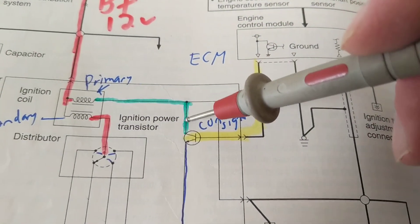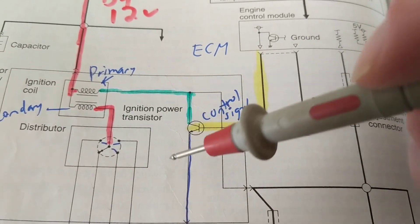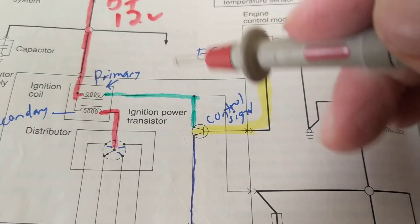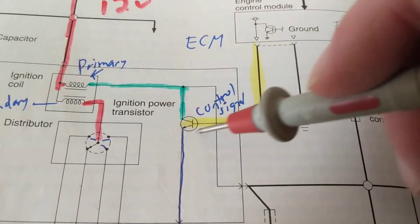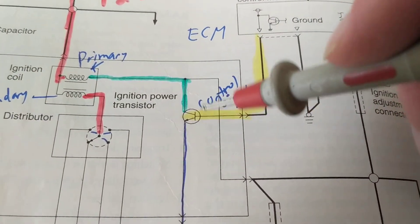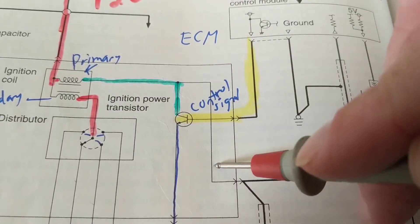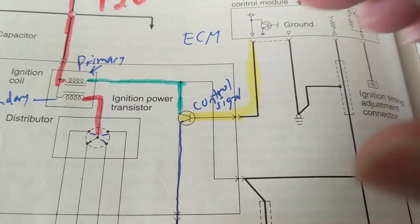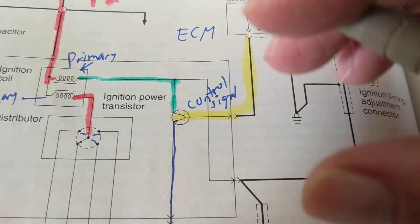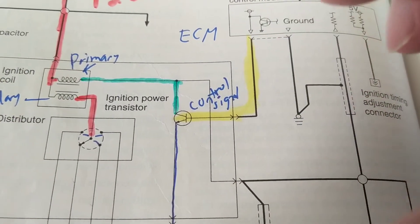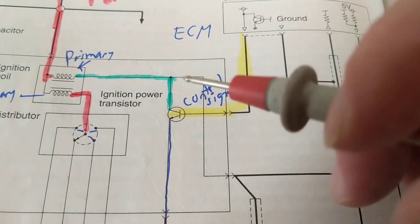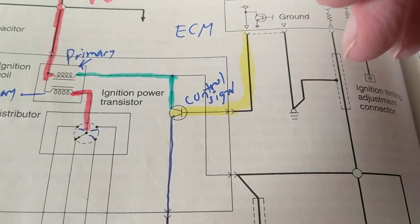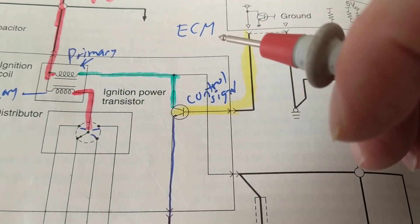Remember before we had a little switch — that's why I told you to remember the other diagram. Now we have a symbol of a transistor. A transistor is a device that can be used either as an amplifier to amplify voltage, power level, power gain, or audio gain.